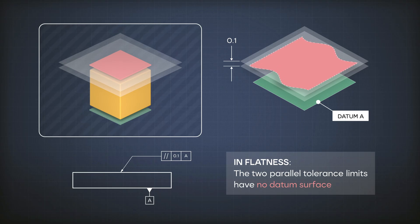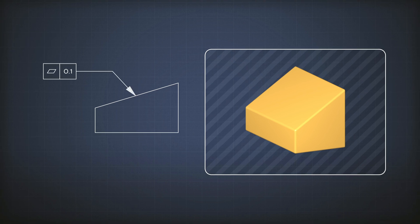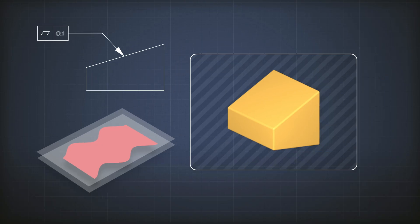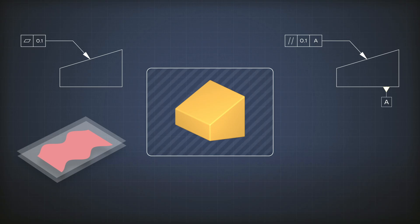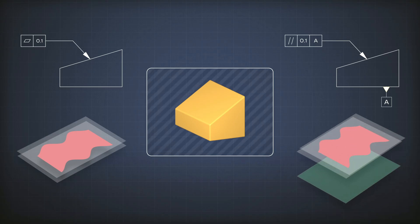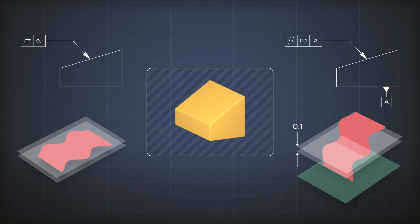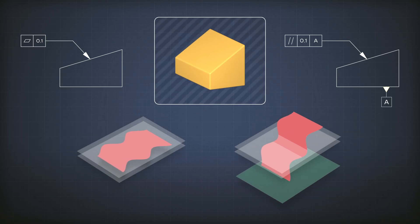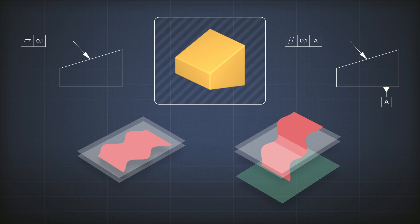In flatness, the planes were parallel to the surface being measured itself. So if I have a real part and a flatness tolerance of 0.1, the tolerance zone for flatness will have that orientation. But for parallelism, because I chose this to be my datum feature A, I forced my two parallel planes to be parallel to A with a value of 0.1. You can see that parallelism puts much more restriction on the surface than flatness, because the surface not only has to be flat within 0.1 but also has to be parallel to A.